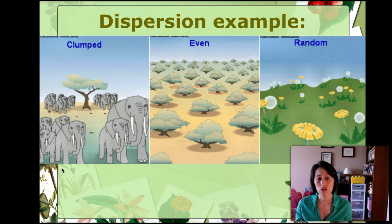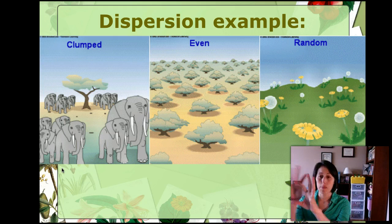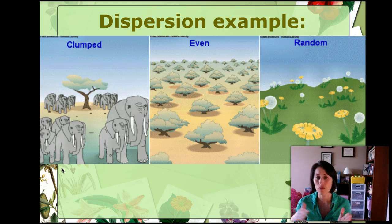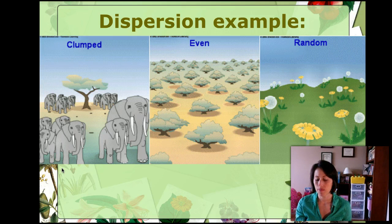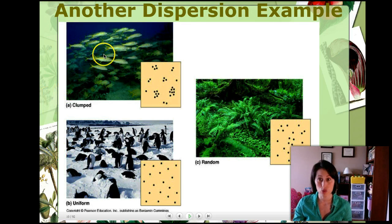An even population distribution is where organisms are distributed evenly, with equal amounts of space between them. The picture here shows trees that are evenly distributed throughout the environment. Random distribution is where there might be a few organisms here, a little more there, a couple over here — there's no rhyme or reason, and they don't necessarily live in groups.